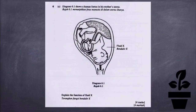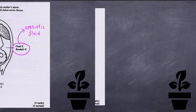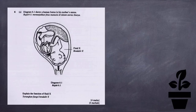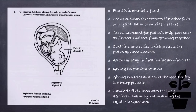The first question is: diagram 6.1 shows a human fetus in his mother's uterus. Explain the function of fluid X. Firstly, we have to know what fluid X is. Fluid X is amniotic fluid.